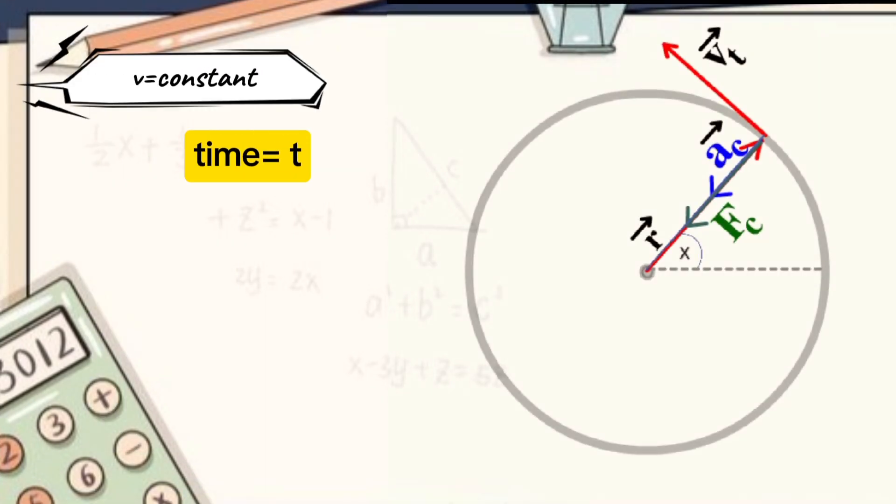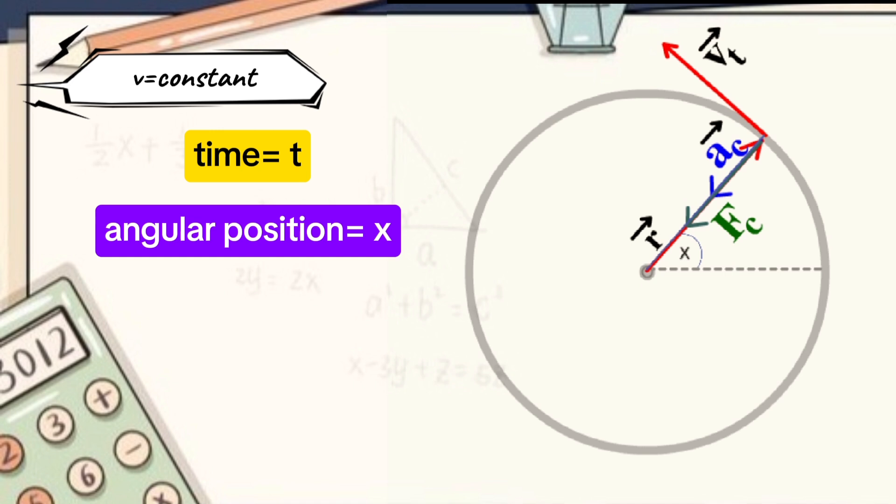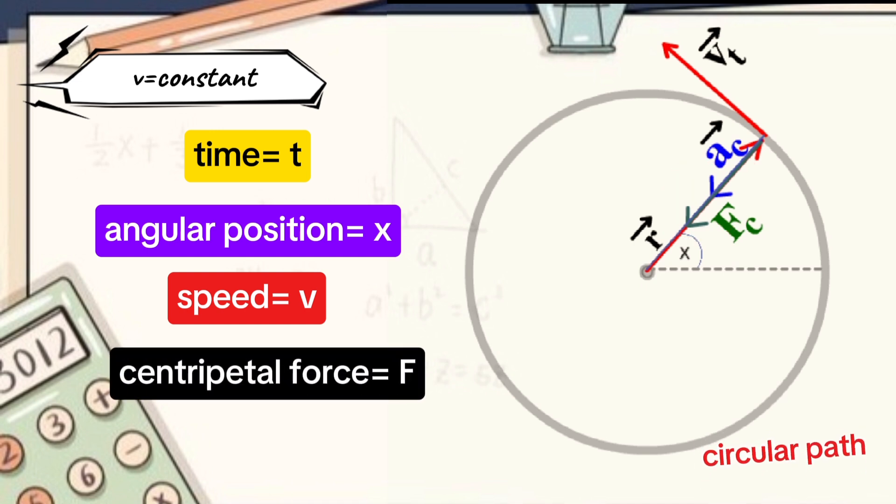Consider at some time instant t, the object is at some angular position x. Suppose the object is moving on the circular path with some speed v. As we discussed, a centripetal force acts on the object in the radial direction and acts towards the center of circle.